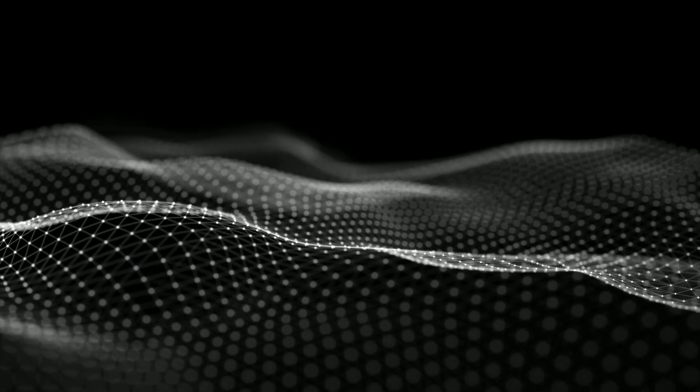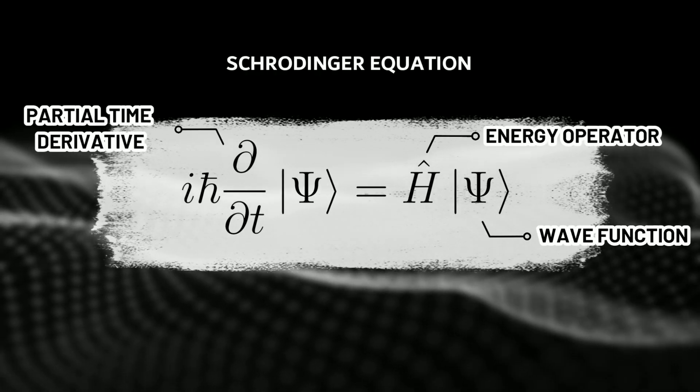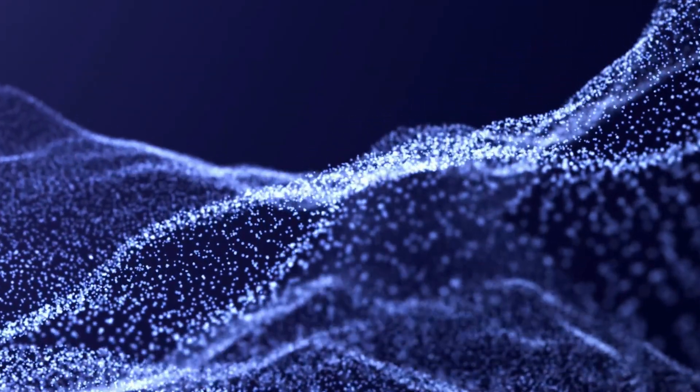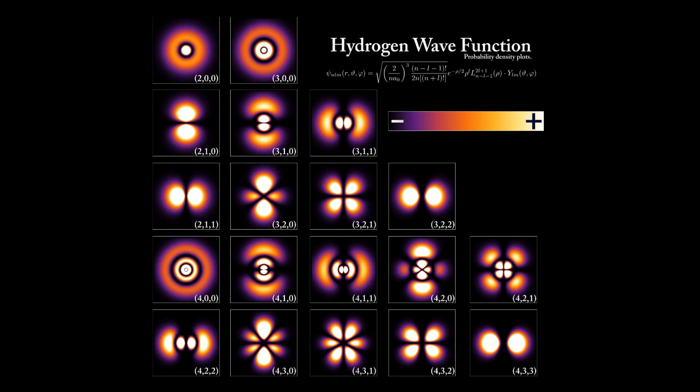Now let's go to the opposite — the minutest microscopic world — and talk about the second most important equation in physics: the Schrödinger Equation. Given by Erwin Schrödinger in 1926, it explains the motion of sub-atomic and atomic particles. In the microscopic atomic world, the motion of objects is very different from the macroscopic world — particles do not behave as we expect. Their motion is best represented by probability waves, and understanding this is essential to explain all atomic and molecular behavior.